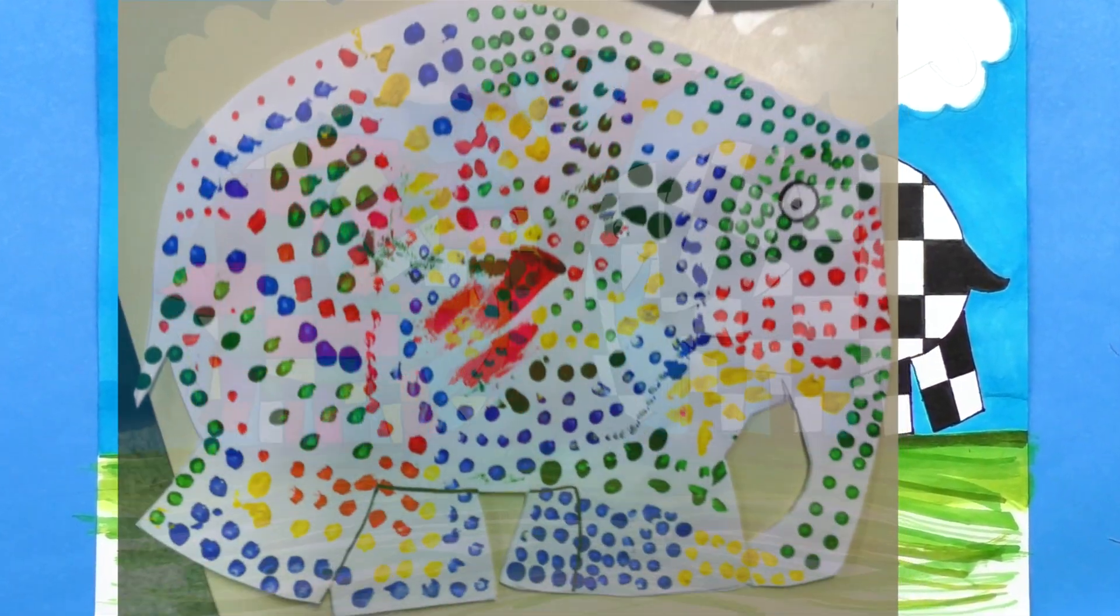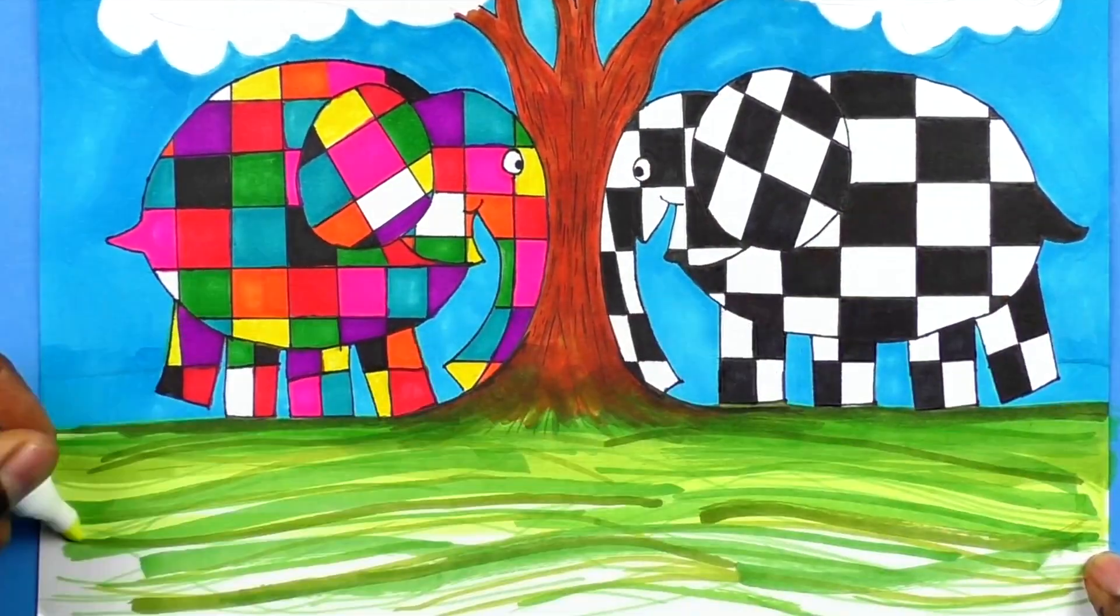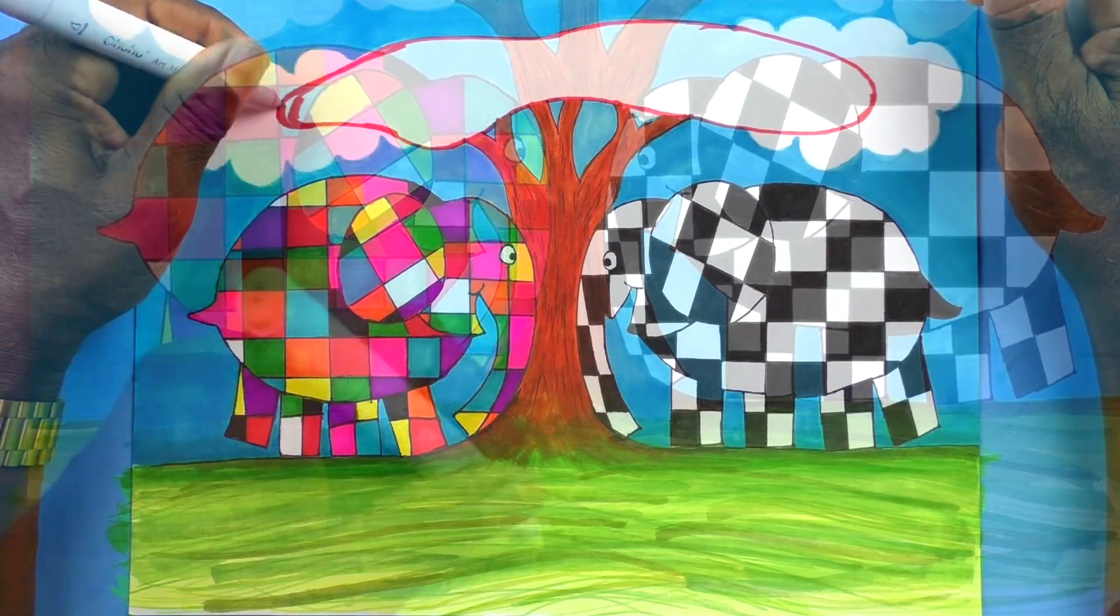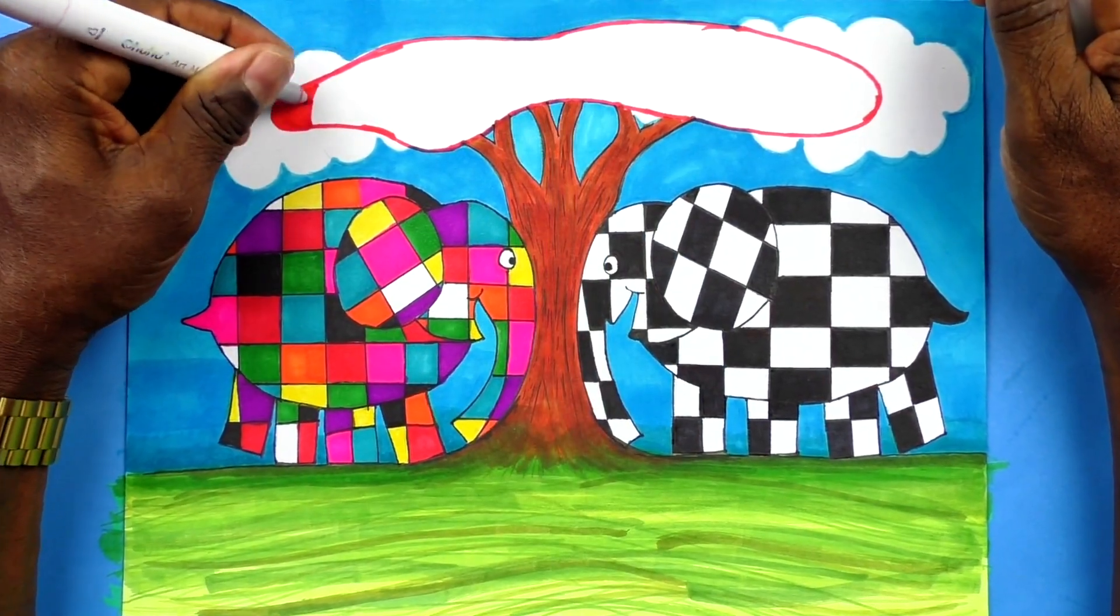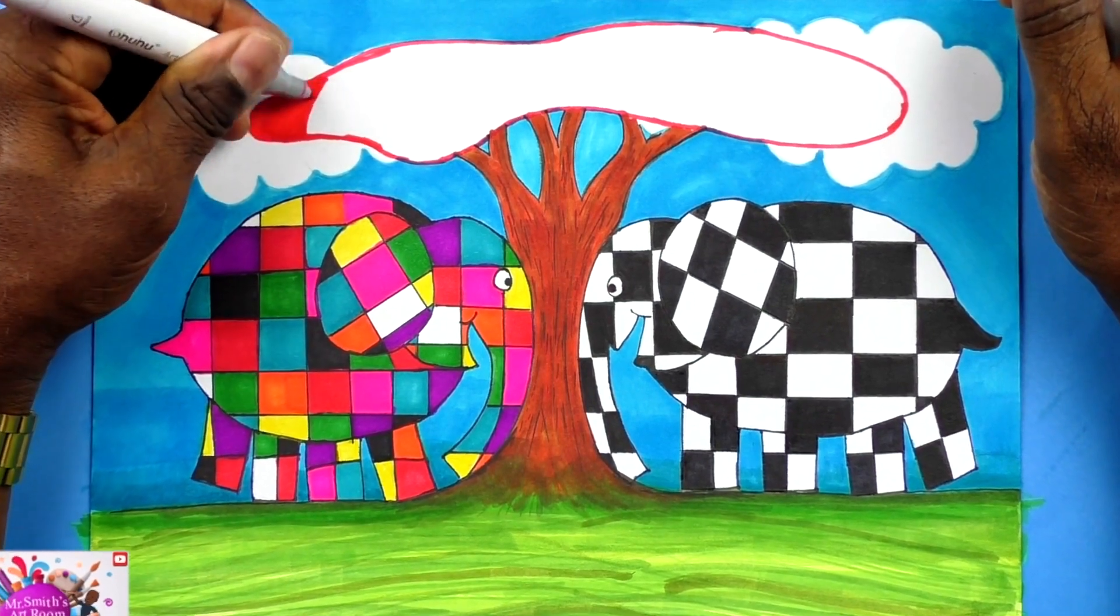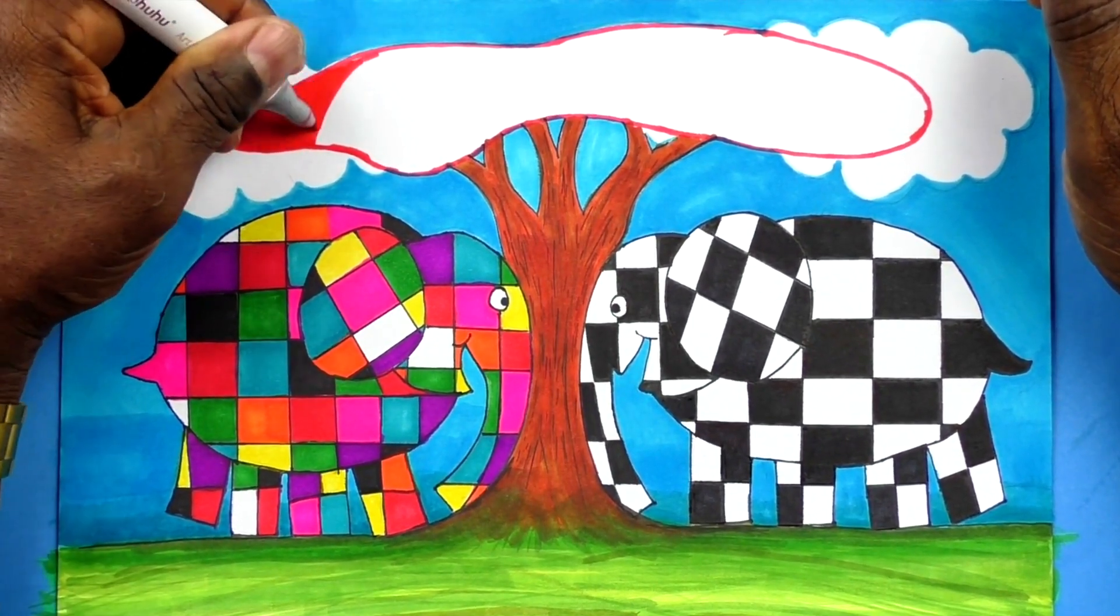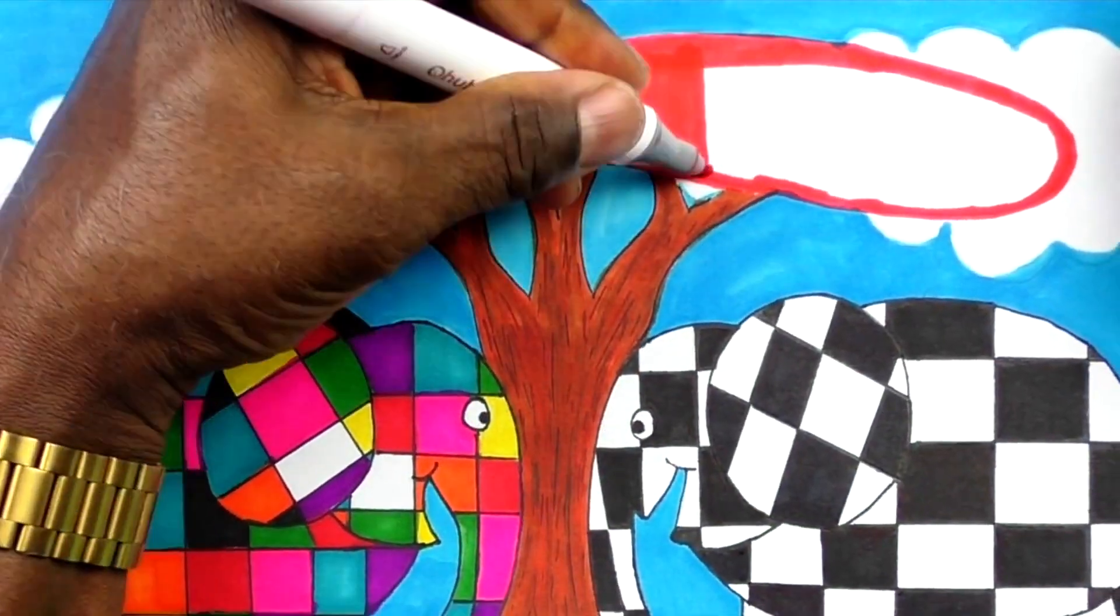So that's why I use Elmer. Because Elmer teaches a wonderful lesson that we should appreciate people because of their differences. These are the things that make them unique and make them special. And we should accept them just as they are.